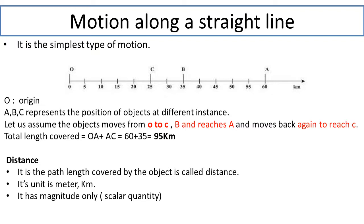In physics, we have two types of quantities: scalar and vector. Scalar quantity is one which has magnitude only. Vector quantity is one which has both magnitude as well as direction. Here, we have defined the term distance, which is a scalar quantity.